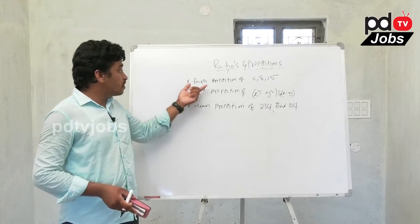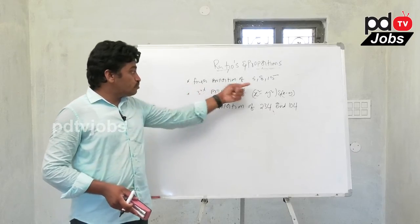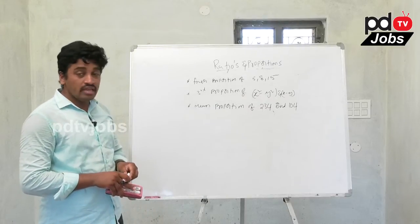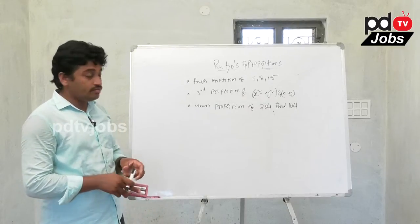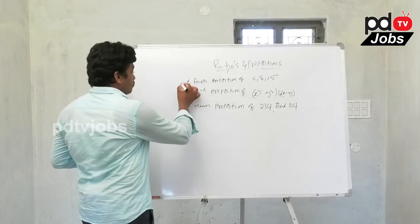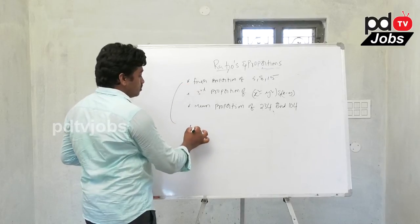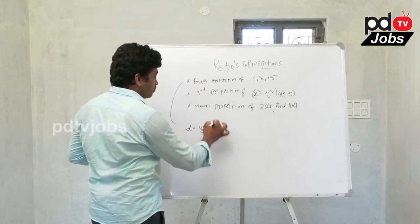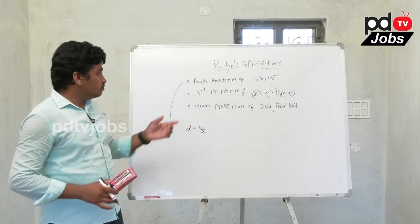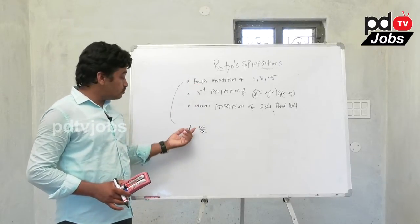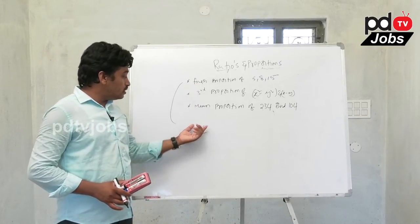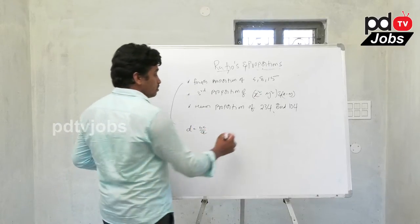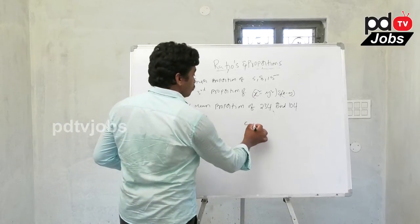Here is an example: fourth proportion of 5, 8, 15. The formula for fourth proportion is d equal to bc by a.